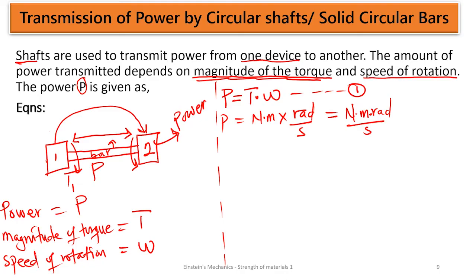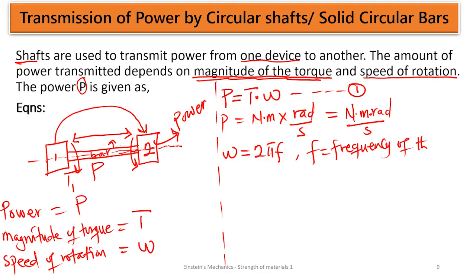We also have a relation for the angular speed. If a shaft is rotating about its axis, we can find an expression relating its velocity and the frequency. The angular speed omega is going to relate to 2πf, where f is the frequency of rotation. So if you know the frequency of rotation, you can use this expression to derive omega.